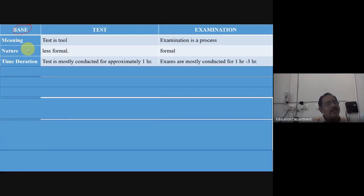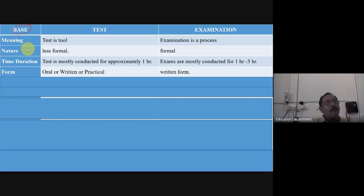Time duration: a test is not for three hours. Examination generally is for three hours - more duration. Form: oral or written or practical for test. Only examination is only written form. Frequency: more frequent for tests, less frequent for exams.